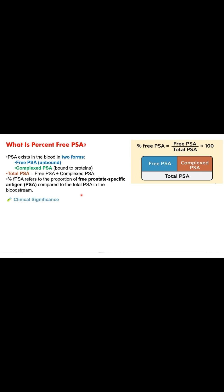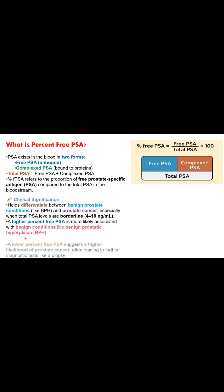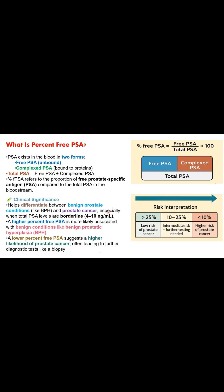Why do we require this free PSA, or what is its clinical significance? It helps differentiate between benign prostate conditions like BPH and prostate cancer, especially in individuals who have PSA levels in the borderline range — that is, between 4 to 10 nanograms per ml. A higher percent free PSA is more likely associated with benign conditions like BPH, while a lower percent free PSA suggests a higher likelihood of prostate cancer, leading to further diagnostic tests like prostate biopsy. This helps to avoid unnecessary biopsies in patients who are in the gray zone.